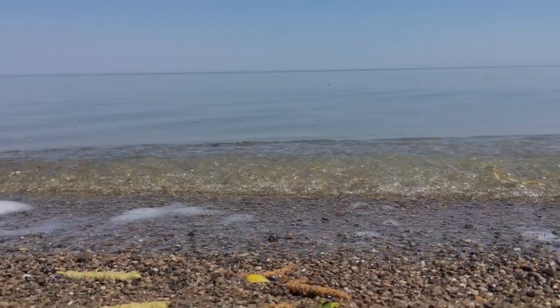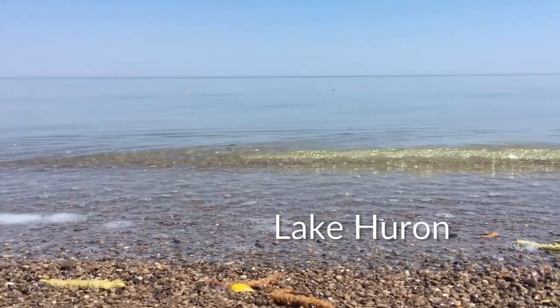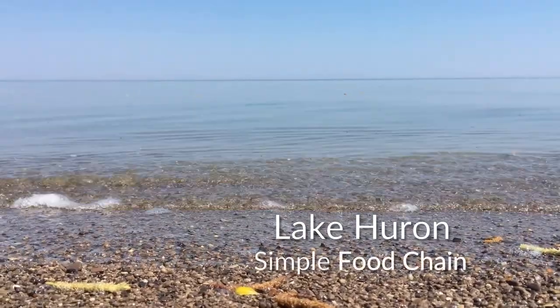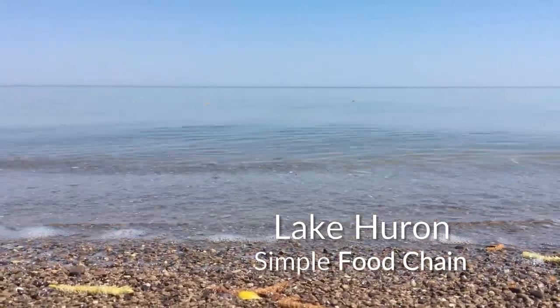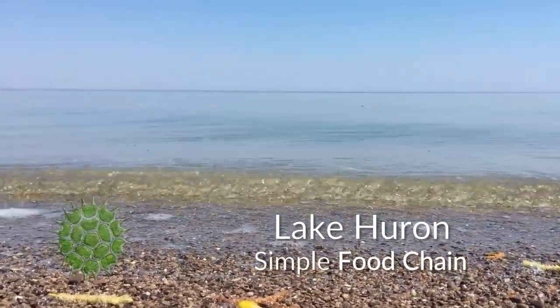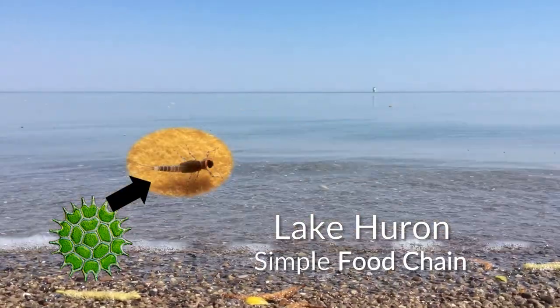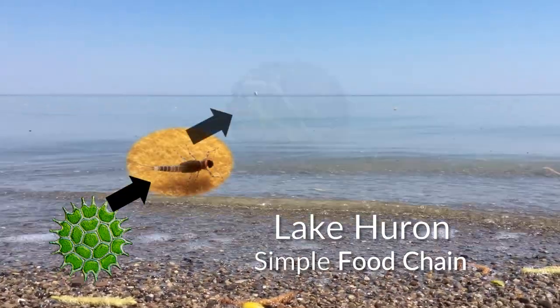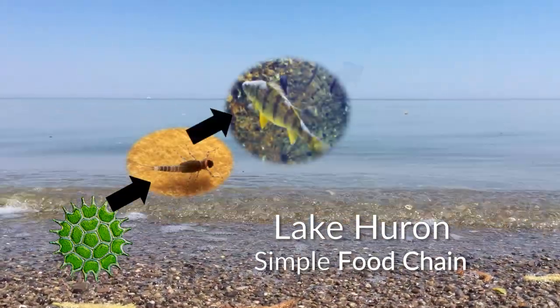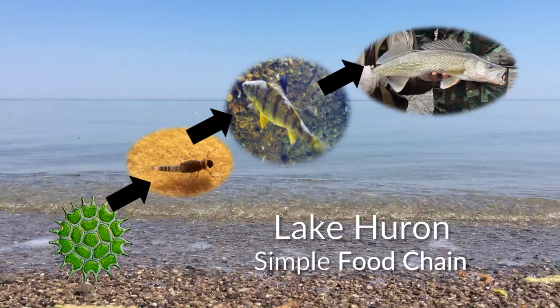Let's step back and start with the term food chain. A food chain is a simple way to show who eats whom in a given ecosystem. For example, in Lake Huron, a simple food chain may show green algae eaten by mayfly nymphs, eaten by yellow perch, eaten by walleye.